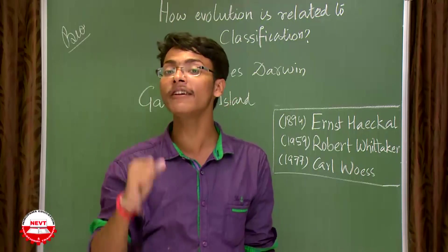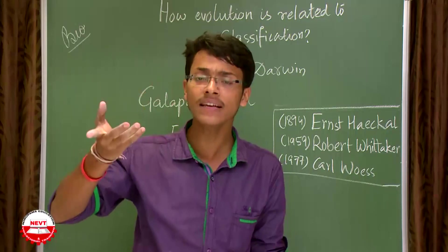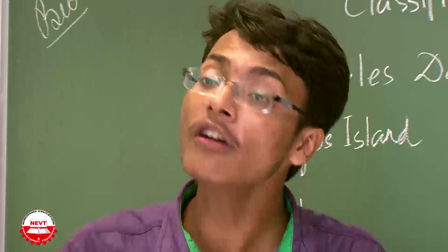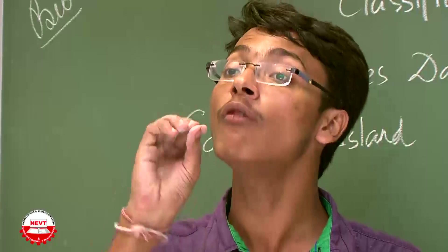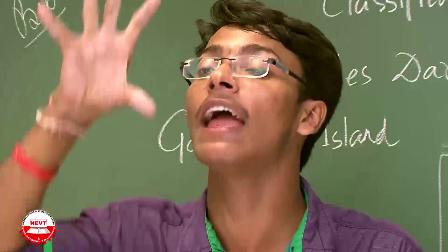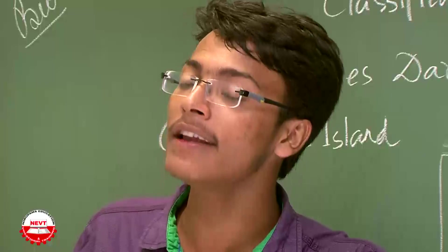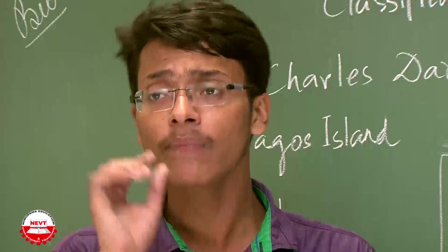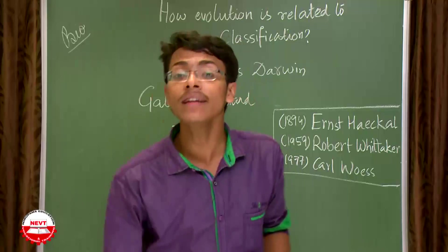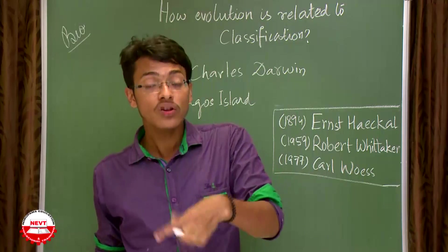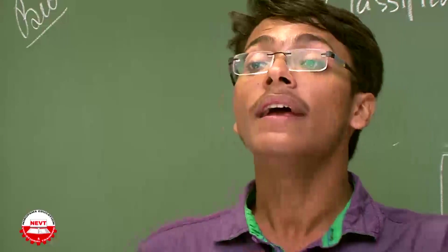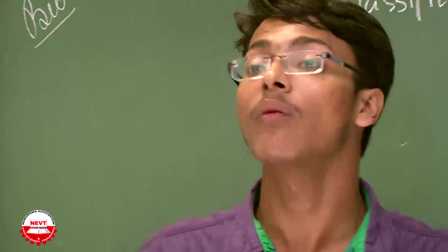Darwin concluded: finches around the periphery need long and pointed beaks to take out fish from the ocean or sea. Those in the middle feed upon fruits, so they need a small beak with wide opening to engulf the fruit. Those deep inside the island have very small, minimally opening beaks because they were feeding upon insects. So the location of the finches determined the type of beak they had.